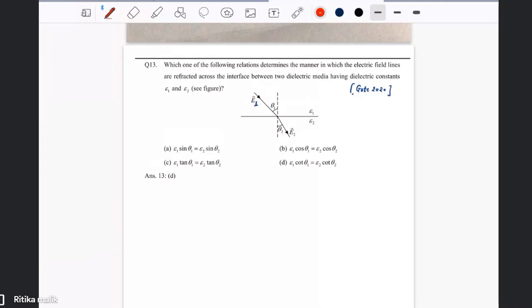So we are given an interface here. This is very much like a plane sheet charge, and the electric field above that surface is E1 and below the surface is E2. With normal to the surface, they are making angles theta 1 and theta 2.